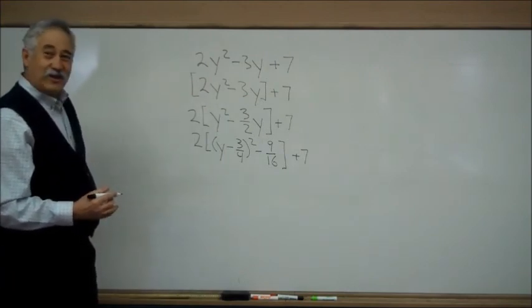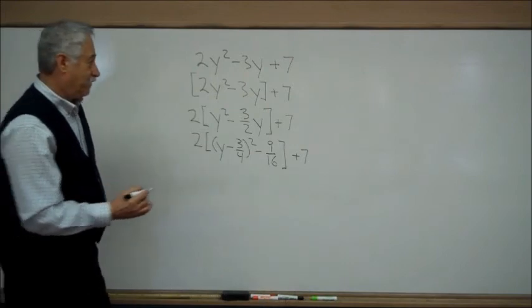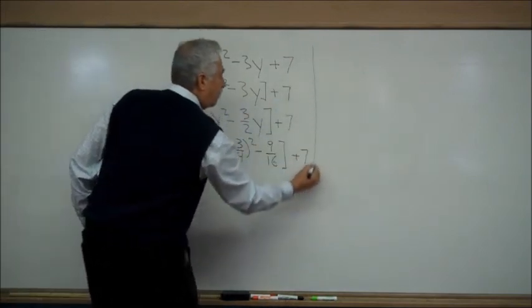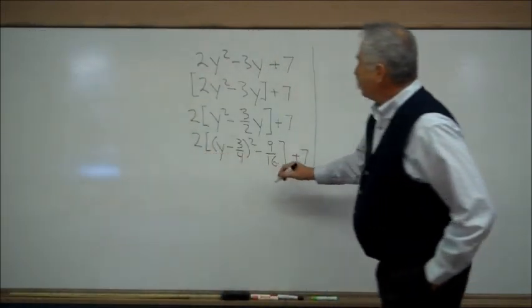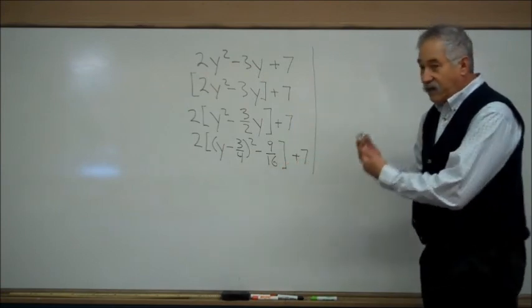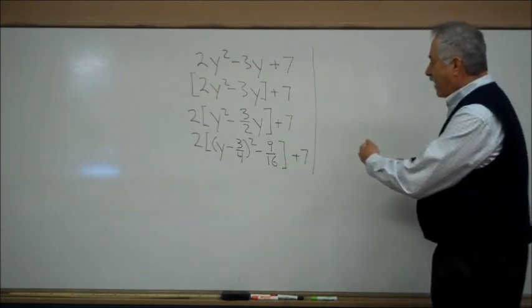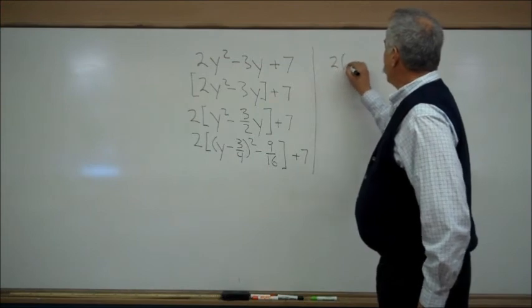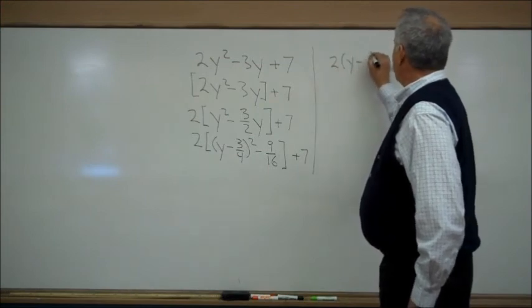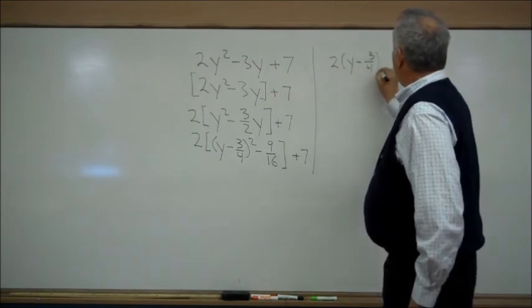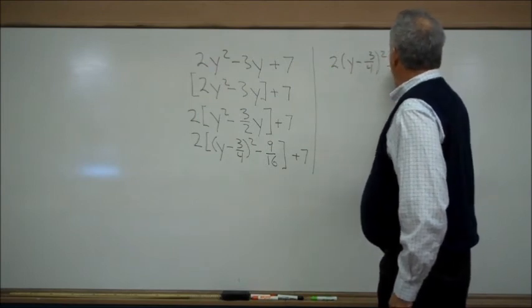Unpleasant as this looks, we're almost done. Let's continue on the side. Distribute the 2, this is cleaning up now, into the bracket. So you have 2 times parentheses (y - 3/4), quantity squared, minus...